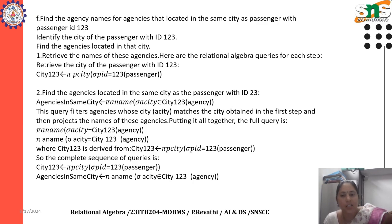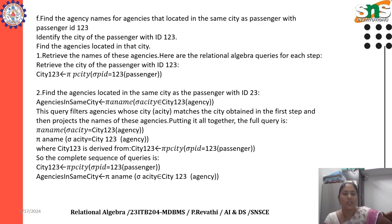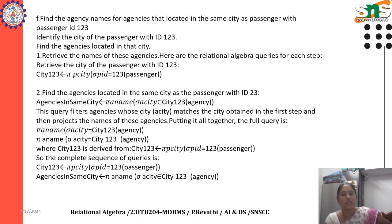Find the agencies located in the same city as the passenger with ID 123. Agencies in same city: assertion operation pi a_name, selection operation a_city ∈ city_123 of agency. This query filters agencies whose city matches the city obtained in the first step, then projects the name of those agencies.